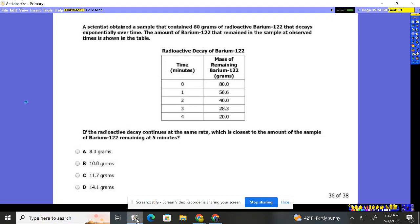All right, problem 36 here. A scientist obtained a sample that contained 80 grams of radioactive barium 122 that decays exponentially. It already tells us it's decaying exponentially, which means we're using the formula A times B to the X. B is going to be some fraction like 0.8 or 0.7 or 0.6.